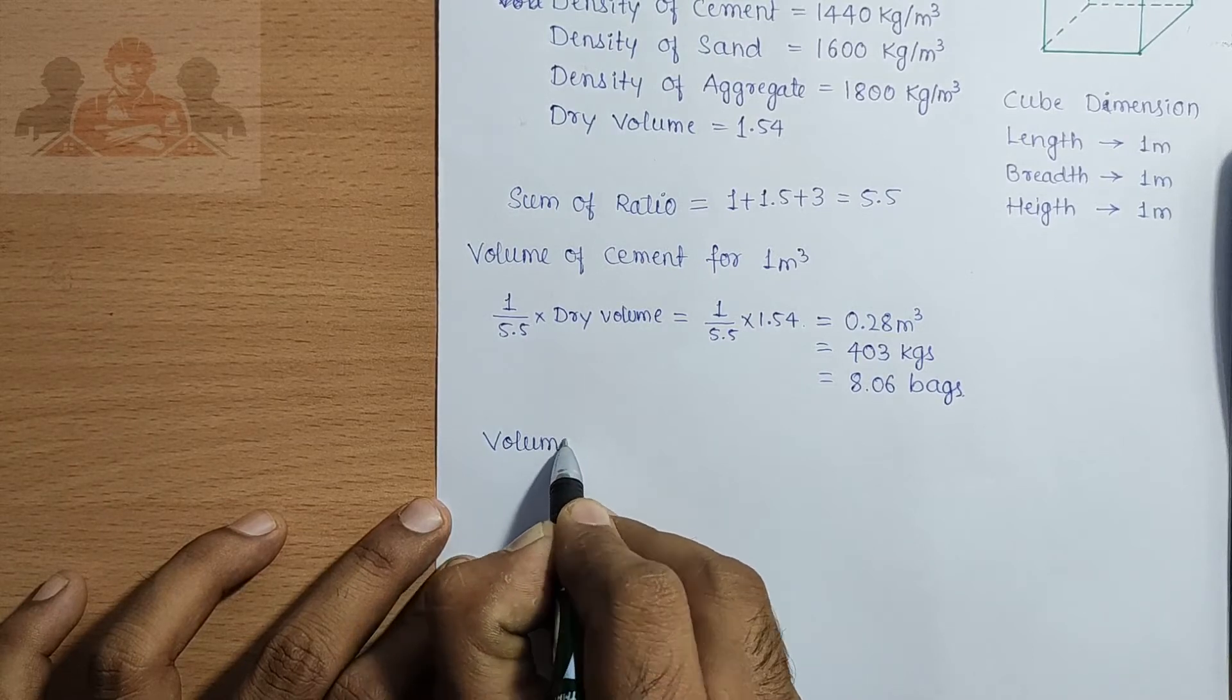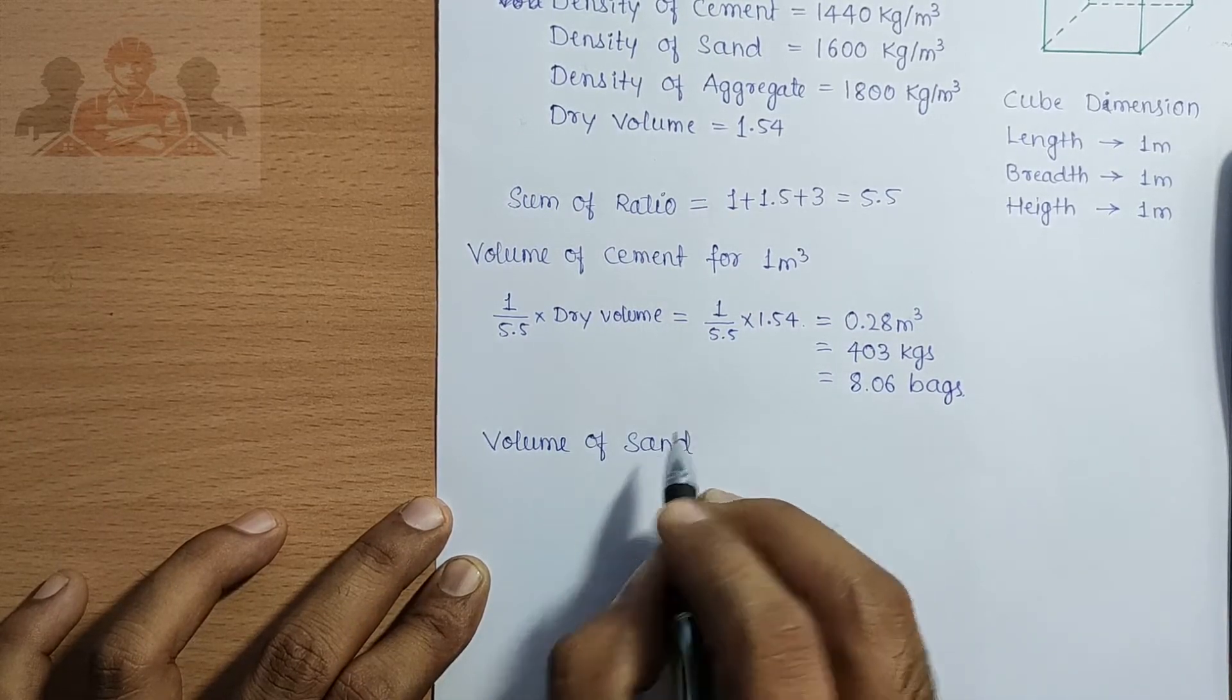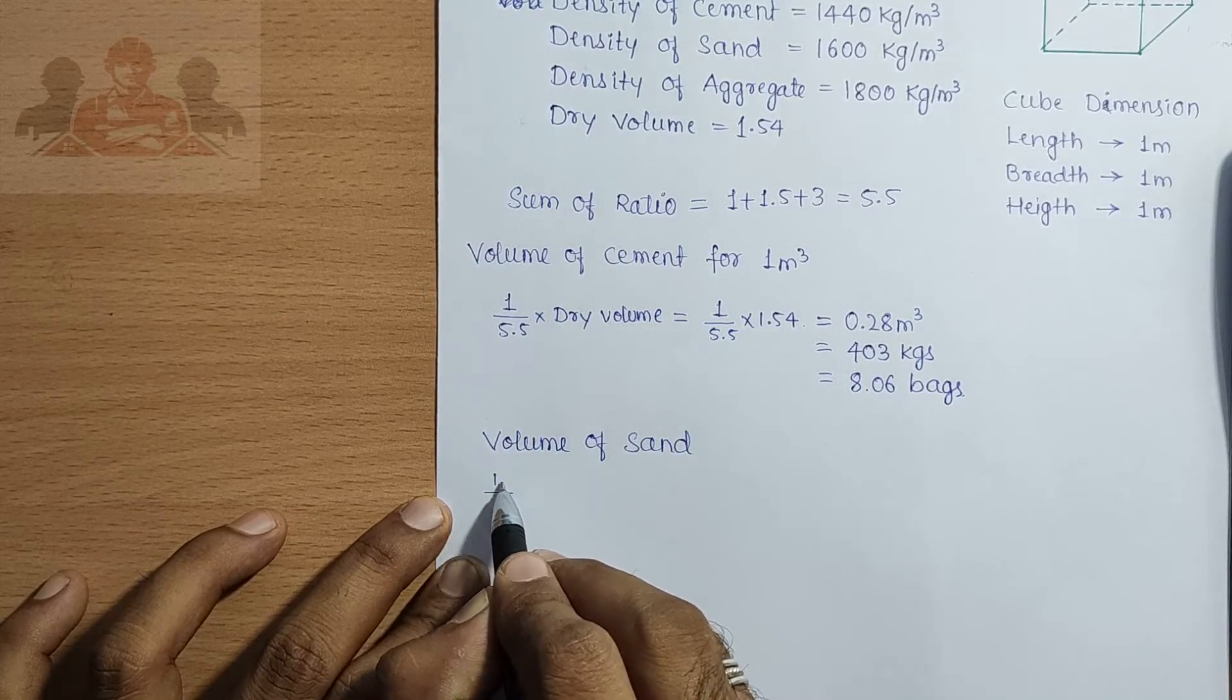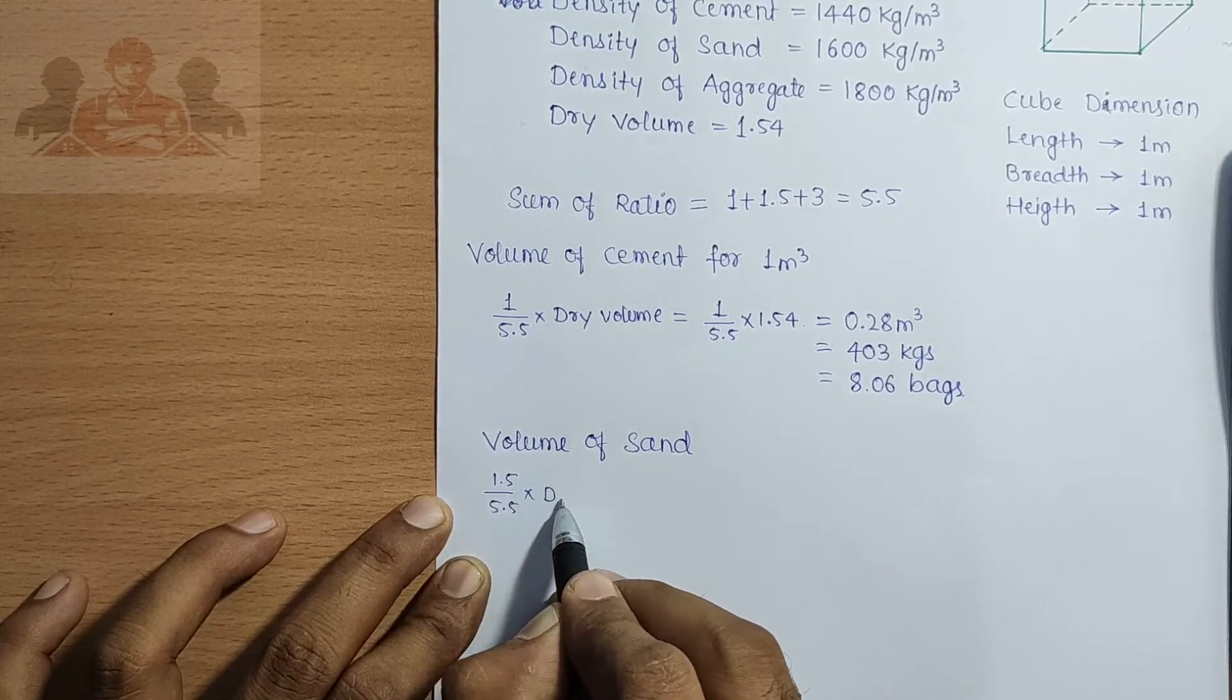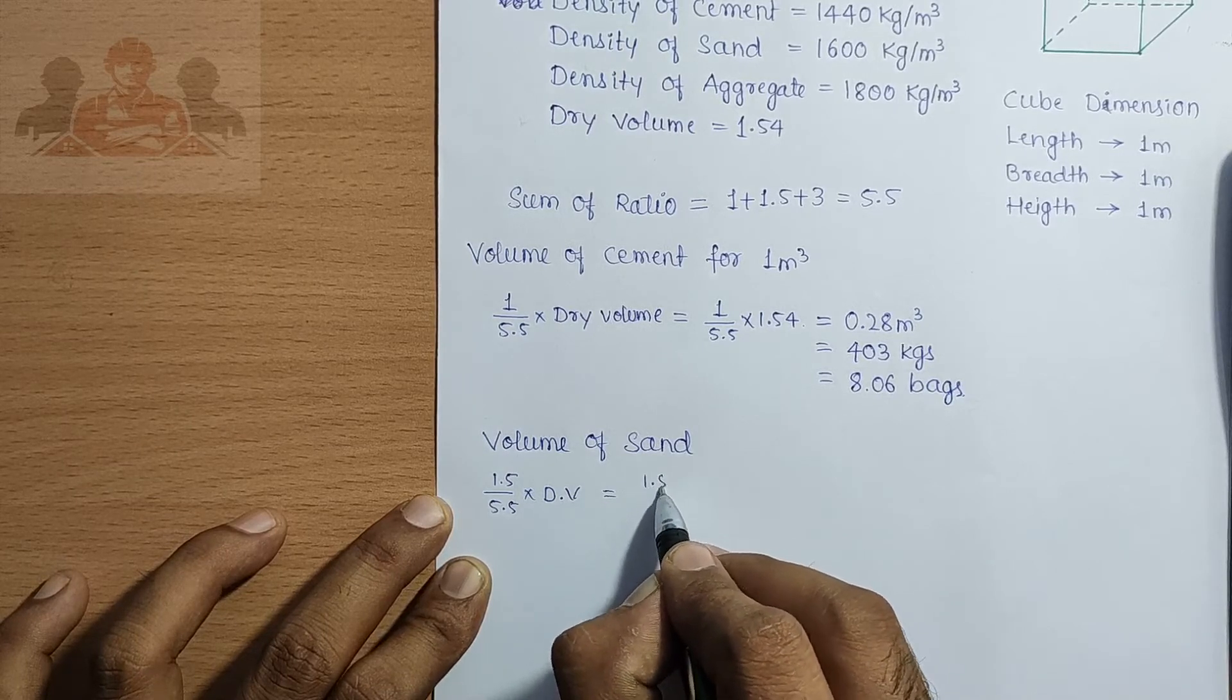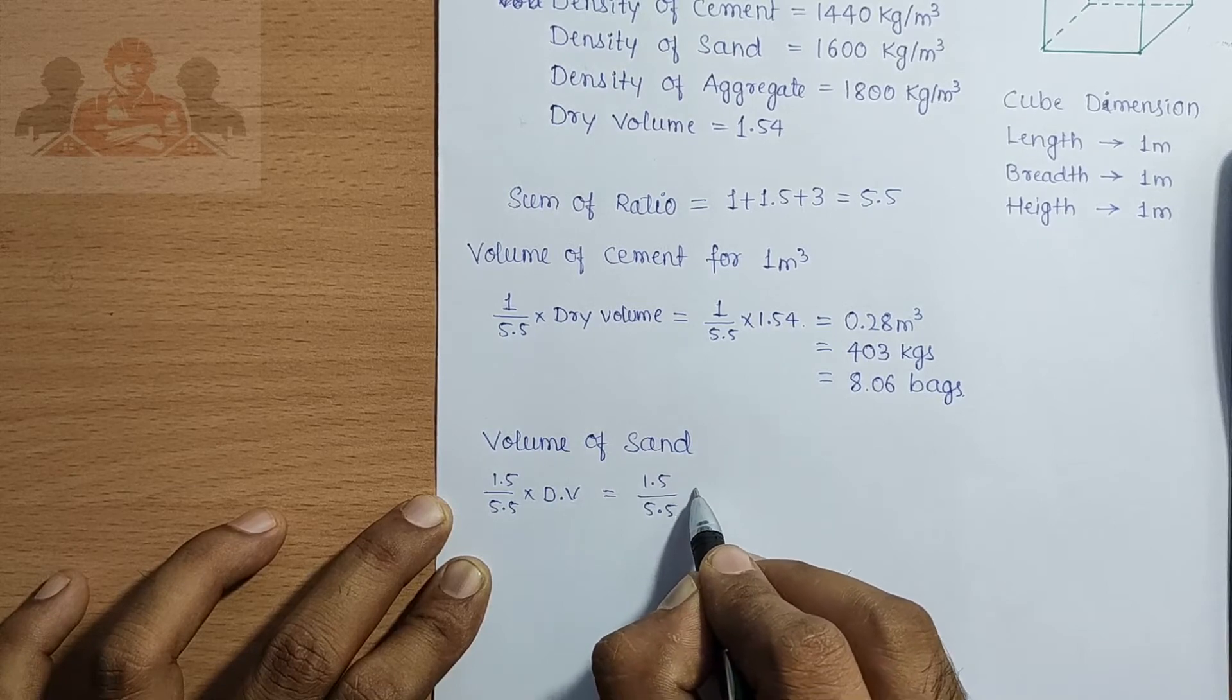Now, value of sand: 1.5 divided by 5.5 into dry value 1.54 equals 0.42 meter cube.